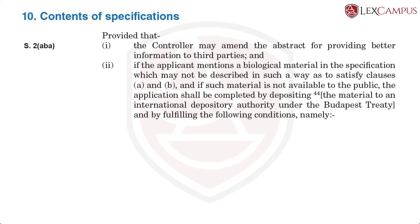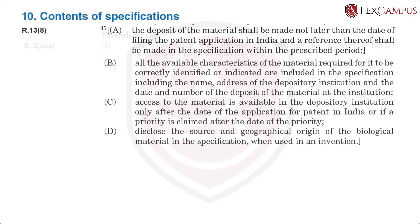In the complete specification, where an applicant mentions a biological material and if the biological material is not described in a satisfactory manner and if such material is not available to the public, then the applicant shall deposit the material to an international depository authority under the Budapest Treaty. Once the biological material is deposited, there is a date on which that is done and a number which is given. Those details have to be included in the specification, and access to the material is available in the depository institution only after the date of the application for patent in India, or if the priority date is claimed, after the date of priority.